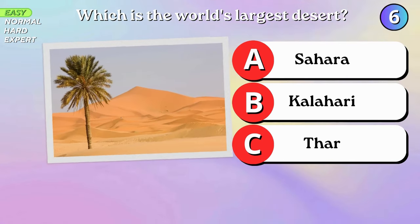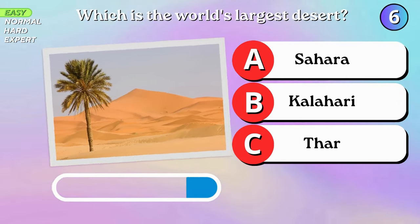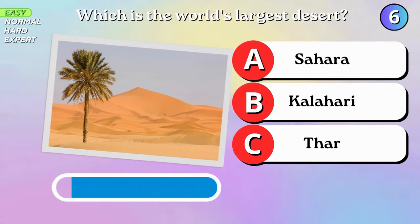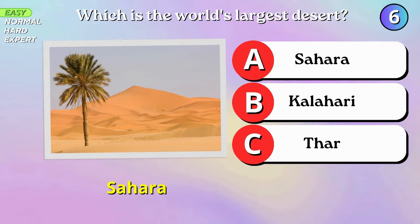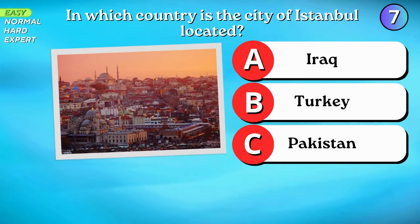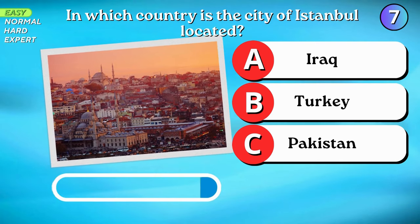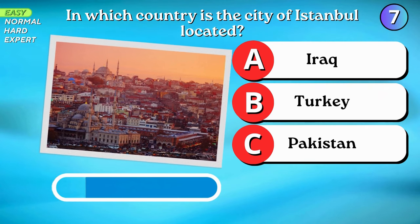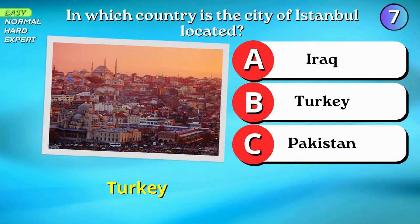Which is the world's largest desert? Sahara! In which country is the city of Istanbul located? Turkey.